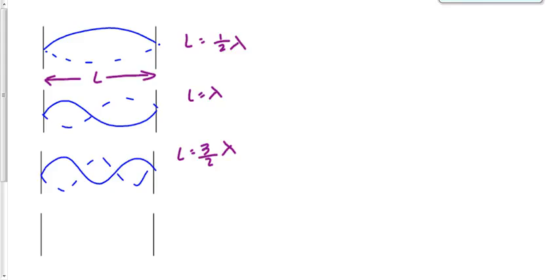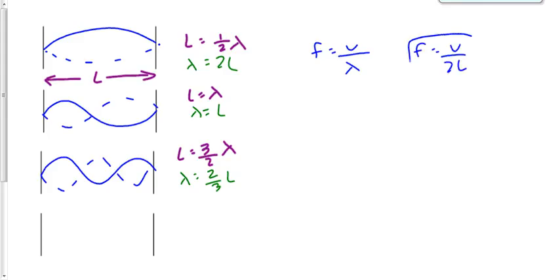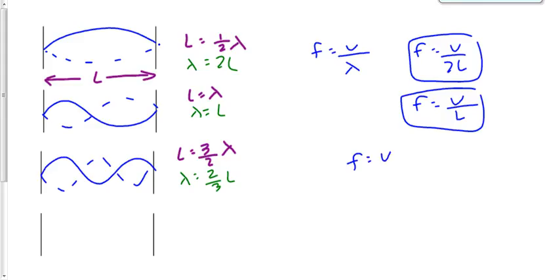Then we rearranged it: lambda is equal to 2L, or lambda equals L, or lambda equals two-thirds L. Then we substituted in the expression for lambda. In the first case, F equals V over lambda, or V over 2L. In the second case, F equals V over L. In the third case, F equals V over two-thirds L, which simplifies to 3V over 2L.